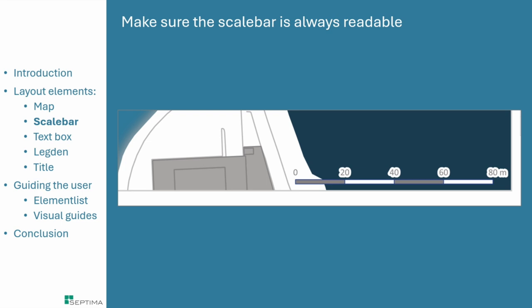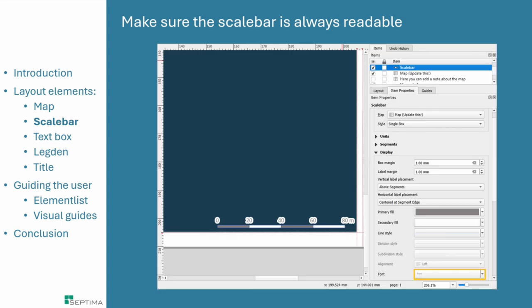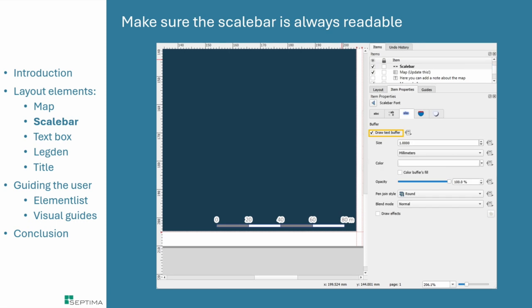It's also a good idea to make sure the scale bar text is always readable. Without a white halo around the text, you wouldn't be able to read '80 meters' against a busy background. You can set this up easily in the font settings by drawing a text buffer. I find this is what's so amazing about QGIS — there are so many settings you can use in various ways.